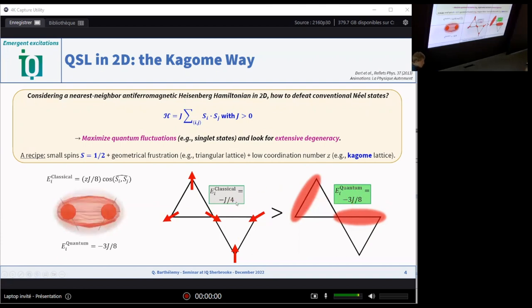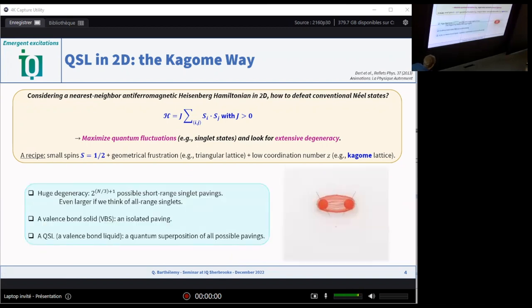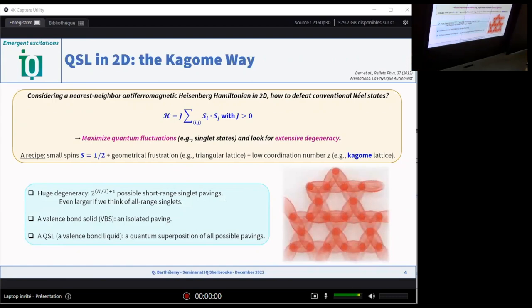On the Kagome lattice, by reducing the coordination number, the quantum energy is lower than the classical energy. The Kagome lattice is a lattice of corner sharing triangles, and now the coordination is 4 instead of 6. In principle, on the Kagome lattice, we can stabilize some singlet states. But we have to keep in mind that such a singlet paving is a frozen state, it breaks some symmetries, it's not a quantum spin liquid. But actually, on the Kagome lattice, there is a huge number of such singlet pavings with the same energy. This extensive degeneracy offers the possibility of a resonating bond state between all possible configurations. So this would be a resonating valence bond state, a prototype for quantum spin liquid on the Kagome lattice.